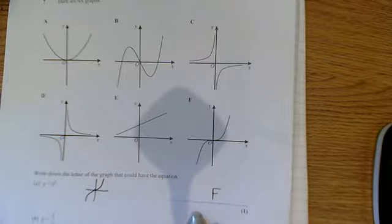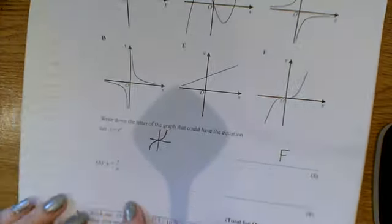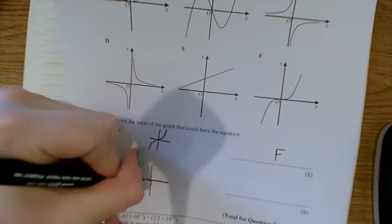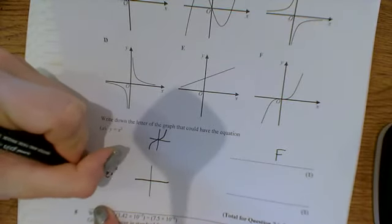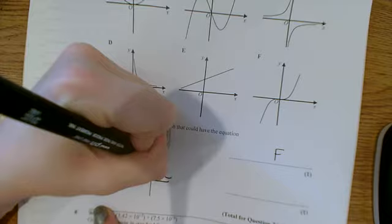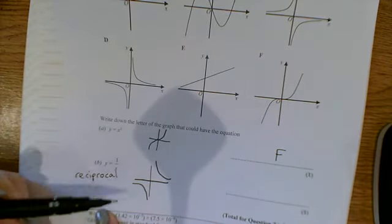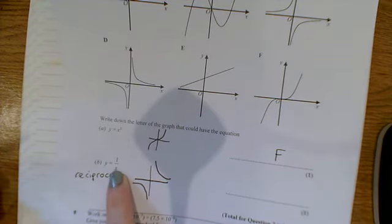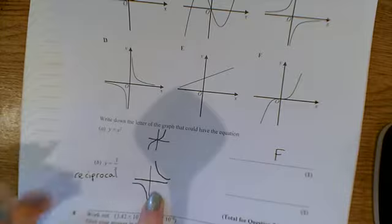With this second one, y equals 1 over x, again, you just need to recognize the shape of it. So the name of this graph is a reciprocal graph, and it takes on this sort of shape. It takes on this sort of shape, and it never touches 0. The reason it never touches 0 is because if x equaled 0, you'd get 1 divided by 0, which is undefined. So it's this sort of shape, which is D.